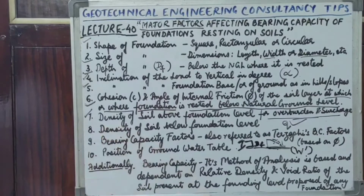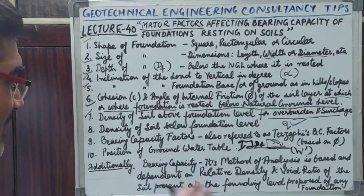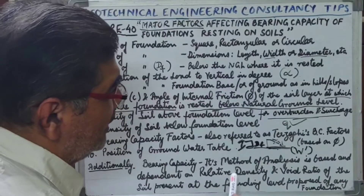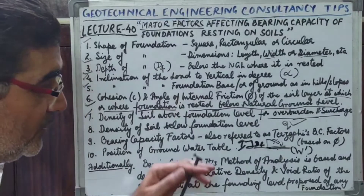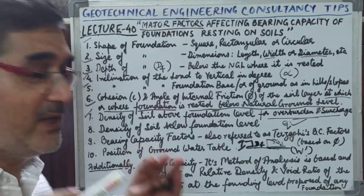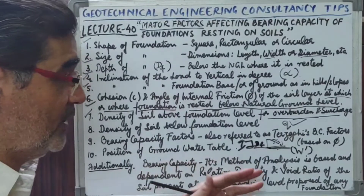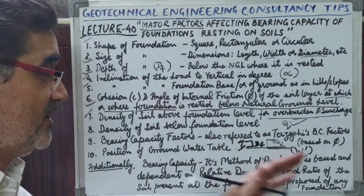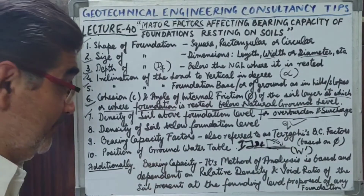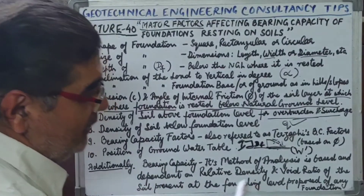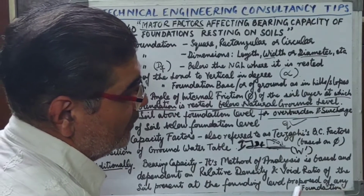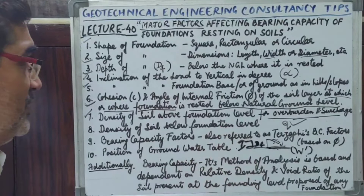Additionally, bearing capacity analysis is based on and dependent on relative density and void ratio, which we get from test results. Void ratio e equals (Gs / γd) − 1, where Gs is specific gravity and γd is dry density. Relative density is (e_max − e_natural) / (e_max − e_min) of the soil at the founding level proposed for that particular foundation and respective structure.